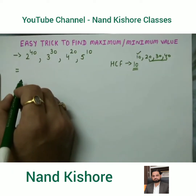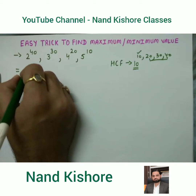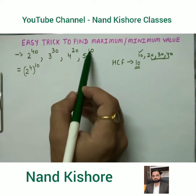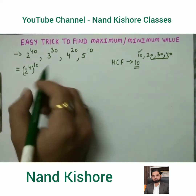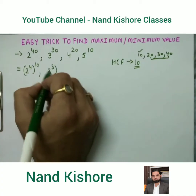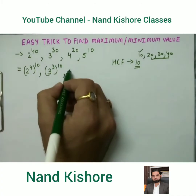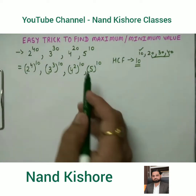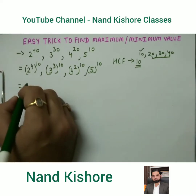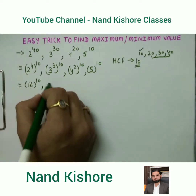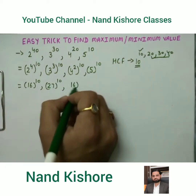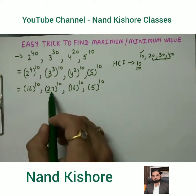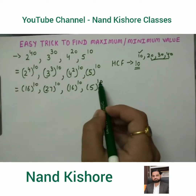Now we apply the trick: make all the powers the same using the HCF. We write 2^40 as (2^4)^10, 3^30 as (3^3)^10, 4^20 as (4^2)^10, and 5^10 stays as (5)^10. Then solve the internal values: 2^4=16, 3^3=27, 4^2=16, and 5 remains 5. So we now have 16^10, 27^10, 16^10, and 5^10.